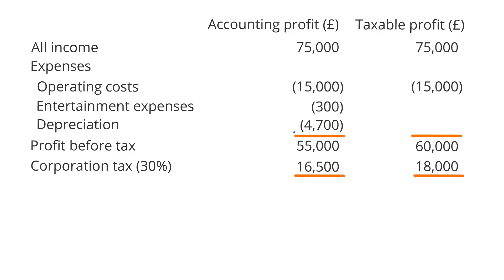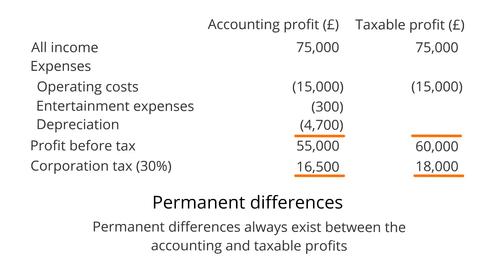There are two different types of differences which arise from the calculation of taxable and accounting profit. The first of these are what are known as permanent differences. As the name suggests, permanent differences will always be in existence between a company's accounting and taxable profits. An example would be our entertainment expenses. In many jurisdictions, tax rules state that entertainment expenses can never be included when calculating taxable profits, so these expenses must always be added back, meaning differences in relation to this expense will always exist when comparing taxable and accounting profit.